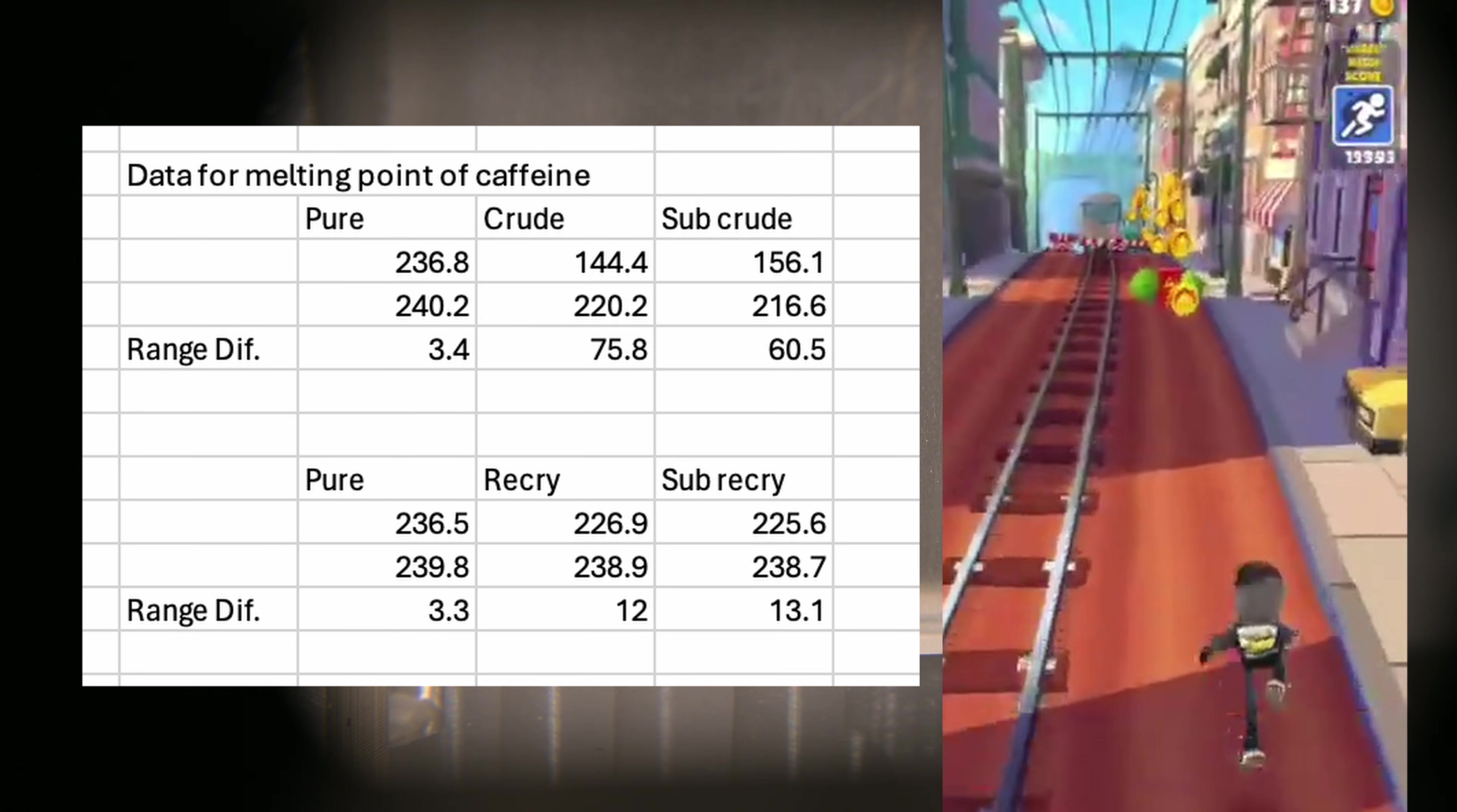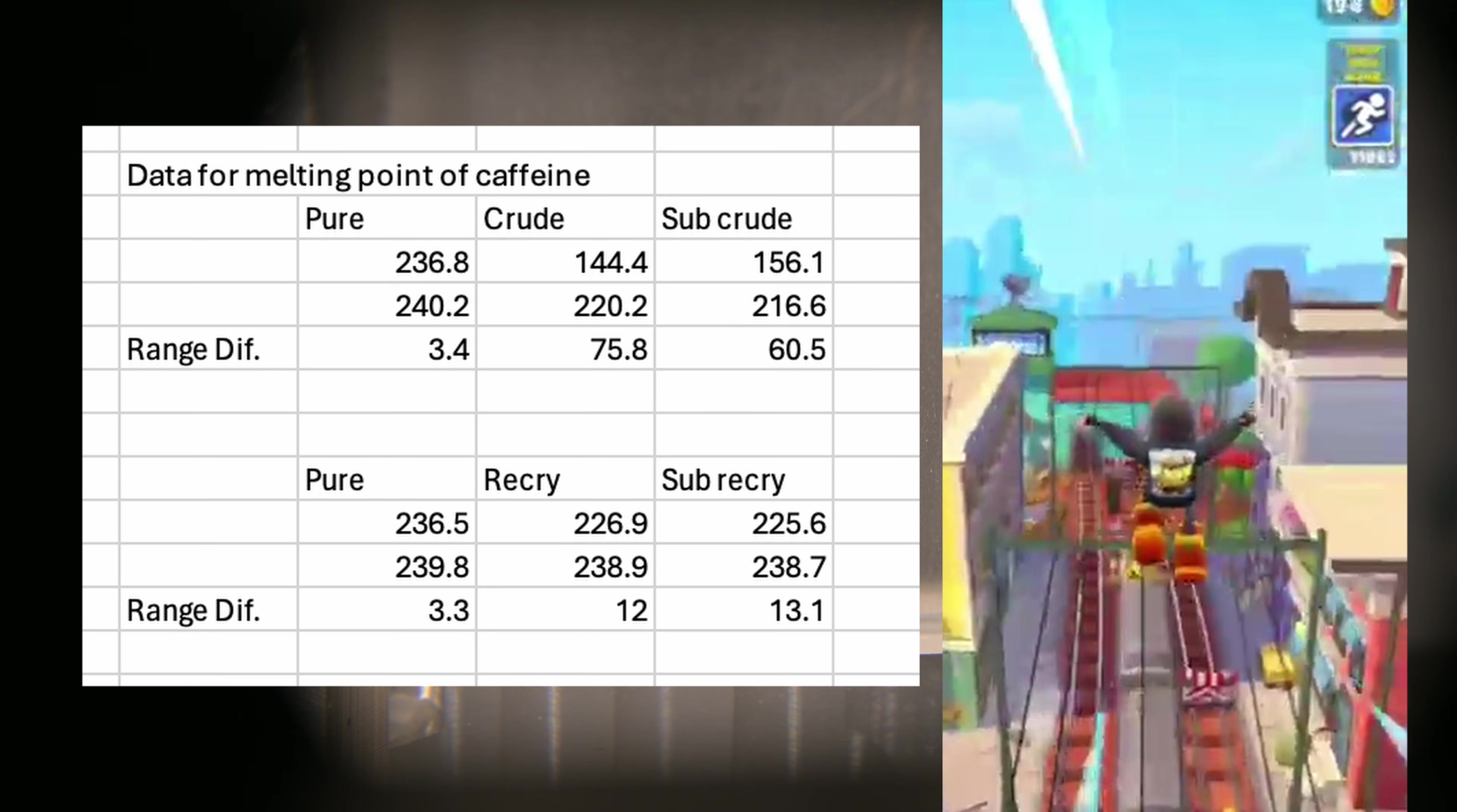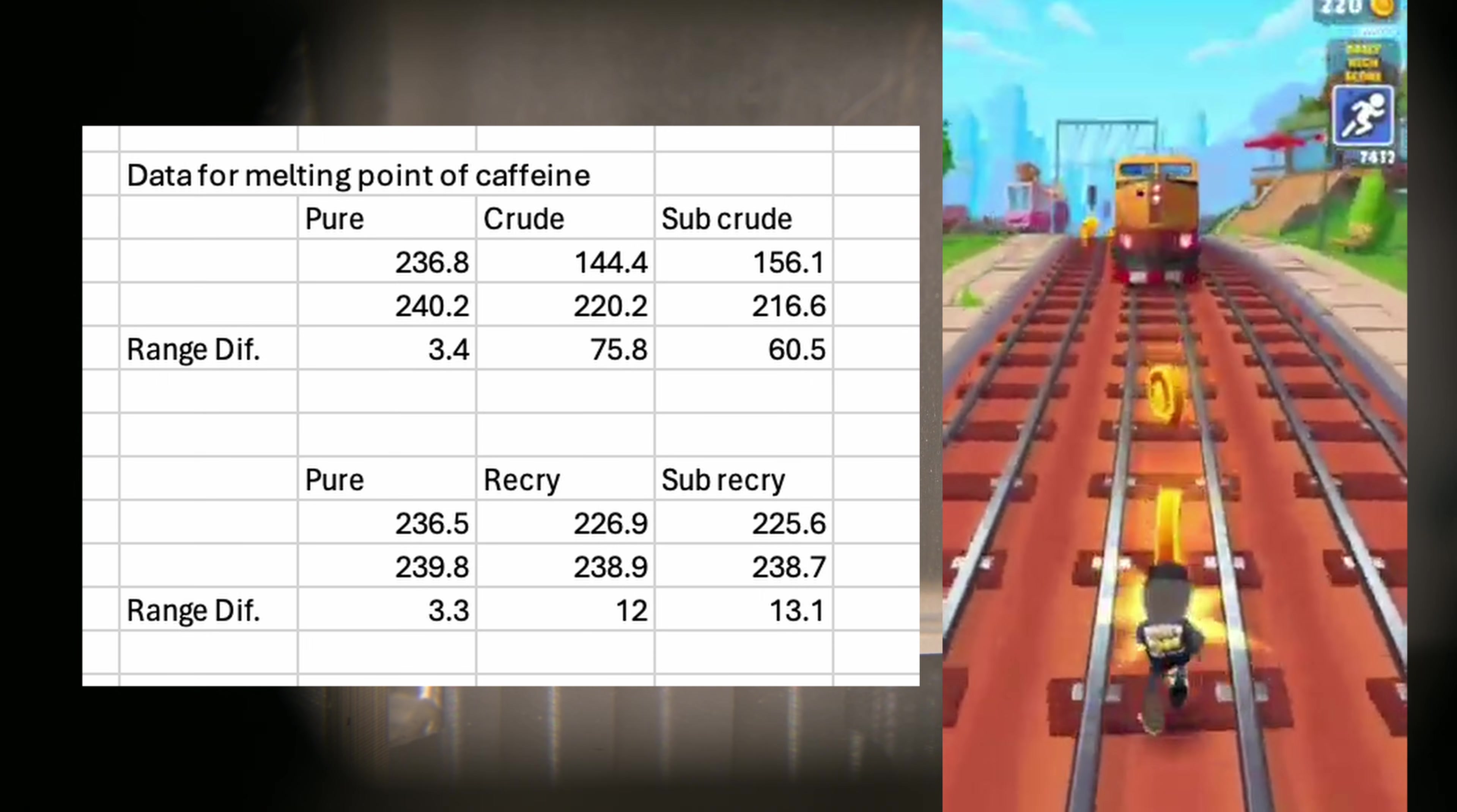Now let's take a look at the recrystallized crude. This has a melting point of 226.9 degrees celsius to 238.9, which is a range of 12 celsius. This shows an increase in purity due to the recrystallization. The sublimated recrystallization has a melting point range of 225.6 to 238.7 degrees celsius, with a difference of 13.1 in temperature range. Interestingly enough, the sublimated recrystallization shows less purity than the recrystallization.